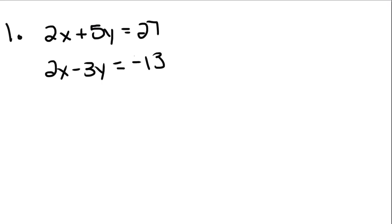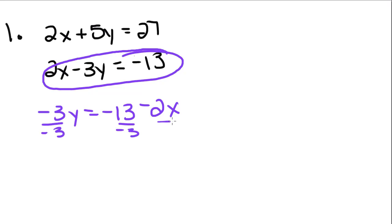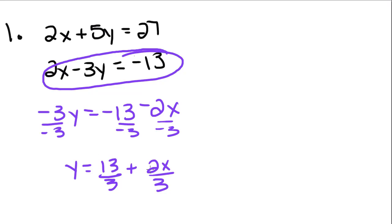Now we're going to do another substitution problem that's a little different. These two equations are in standard form, so in order to do substitution we need to solve one of them for a variable. I'm going to pick this one — no particular reason, you can use either. I'm going to solve for y, so I want to get y by itself. I'll subtract the 2x over to the other side and get negative 3y equals negative 13 minus 2x. Dividing everything by negative 3, I get y equals 13 thirds plus 2x over 3. Both signs become positive because a negative divided by a negative is positive.